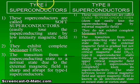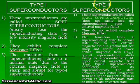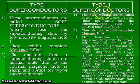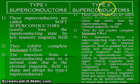Type 1 superconductors exhibit a complete Meissner effect, whereas type 2 superconductors exhibit only a partial Meissner effect — they do not exhibit the complete Meissner effect.